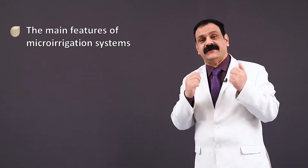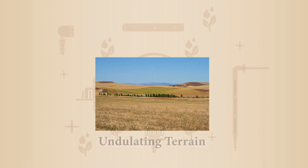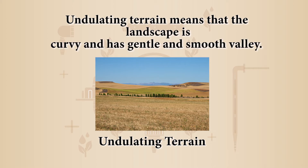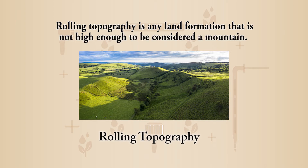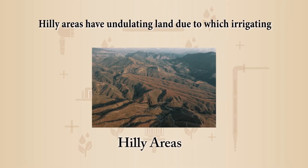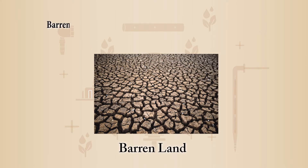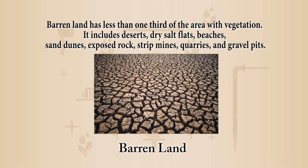In this session you will learn about the main features of micro irrigation systems and its classification. Micro irrigation can be useful in undulating terrain — meaning the landscape is curvy with gentle, smooth, rolling topography — as well as hilly areas, where surface irrigation is quite difficult, and barren lands, which have less than one third of the area with vegetation, including deserts, dry salt flats, beaches, sand dunes, exposed rock, strip mines, quarries, and gravel pits.